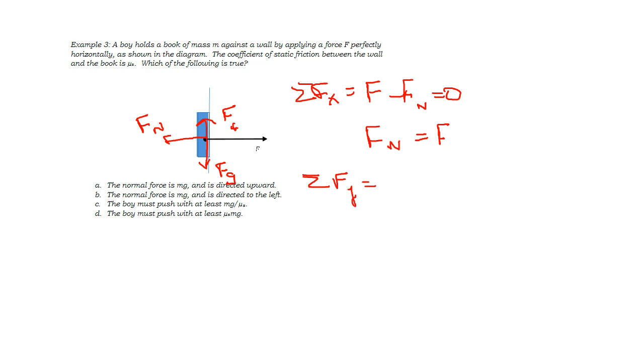Next let's write the sum of the forces in the y direction. Upward we have the force of friction, and downward the force of gravity, and again if the book is not going to move, everything must be equal to zero.